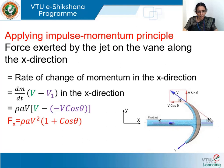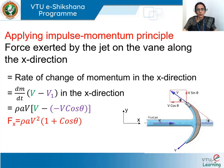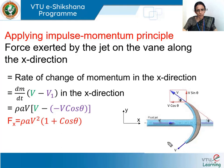The incoming jet travels along the positive x direction and the outgoing jet makes an angle theta with the x direction. Since the vane is smooth and frictionless, the magnitude of velocity is preserved. The outgoing jet velocity v can be resolved into components: x-component is minus v cosθ (negative x direction) and y-component is v sinθ. Similarly, the other outgoing jet has components minus v cosθ along negative x and minus v sinθ along negative y.